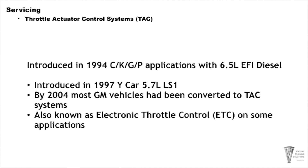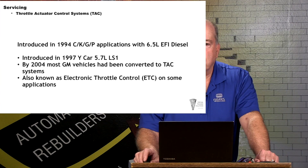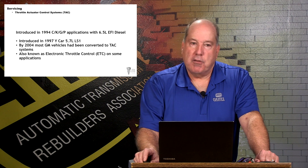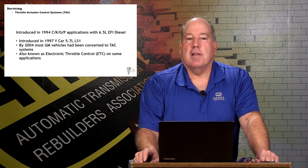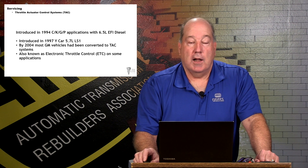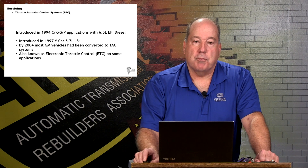You've heard the term throttle actuator control, or TAC system, for several years now. These systems were actually introduced starting clear back in 1994 on the 6.5 EFI diesel. The first gas car to get it was a 1997 Corvette, which is the Y car with a 5.7. By 2004, the vast majority of vehicles produced by General Motors had a TAC system. Pretty well everything has it nowadays, and that system has stayed pretty well the same as we're going to present here today.